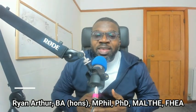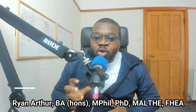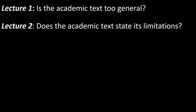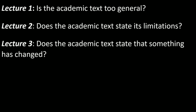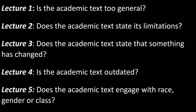This course will show you how to critique academic text. Critiquing academic text is crucial to improve your grades and enhance the quality of your academic work. All the techniques shown here are tried and tested. This course consists of five lectures, each based on five critical undermining questions. Lecture one: is the academic text too general? Lecture two: does it state its limitations? Lecture three: does it state that something has changed? Lecture four: is it outdated? Lecture five: does it engage with issues of race, gender, or class?